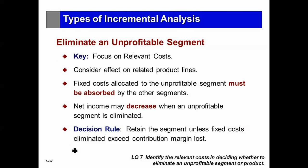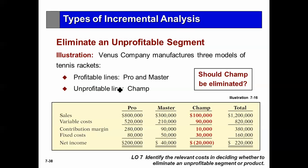Another type of decision is to eliminate an unprofitable segment. Here we focus on relevant costs. Consider three product lines: Pro, Master, and Champ. We have a total income statement for all three, and we can break out revenue, variable costs, and contribution margin by product, then assign fixed costs to see profitability by line. It turns out Champ is not profitable. We're overall profitable by $220,000, so it looks like eliminating Champ would increase profit by $20,000 since it's dragging us down by that amount.